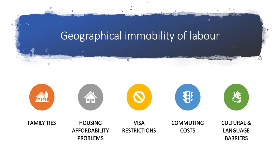A second cause of labour market failure is geographical immobility of labour. Geographical mobility is the ability of people to move around an area, a region, or a country in order to find work. There are many reasons for geographical immobility: close family and social ties, housing affordability problems, visa restrictions when moving between countries, the cost of commuting, and potentially cultural and language barriers.